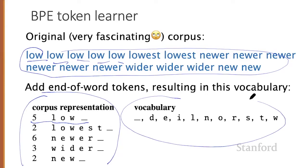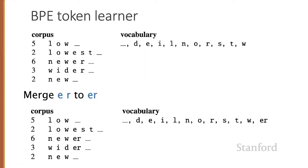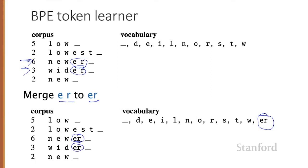Let's walk through the algorithm, seeing how we change the corpus and augment the vocabulary. We begin with the corpus and original vocabulary, and first ask which two letters are next to each other most often. E and R are next to each other six times in the context of N-E-W, and three times in the context of W-I-D — nine times total. So we merge E next to R into a new symbol ER, add ER to our vocabulary, and merge all cases of ER in the corpus.